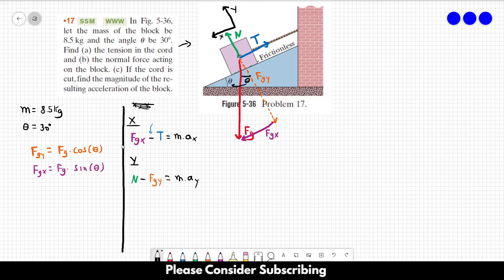These two equations will give us everything that we need. So let's go for letter A. We want to find the tension in the chord, so we want to find this T. And we know that a_x is equal to zero, so FG_X minus T equals zero. So T is equal to FG_X.